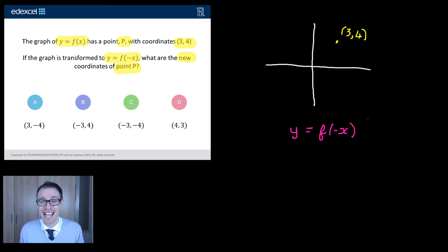So, if you have a minus inside the brackets, f(-x), that's actually going to be a reflection. That's the first key thing to learn. It's going to be a reflection.